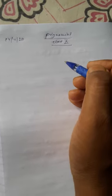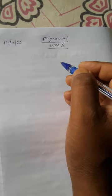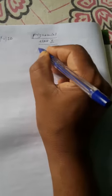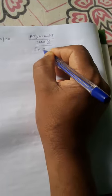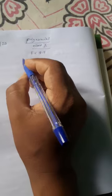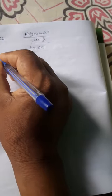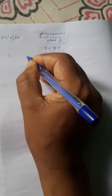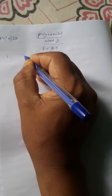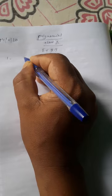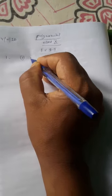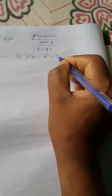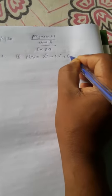So today I am going to start polynomial exercise 2.3, question number one. Divide p(x) by g(x) where p(x) equals x cube minus 3x square plus 5x minus 3 and g(x) equals x square minus 2.